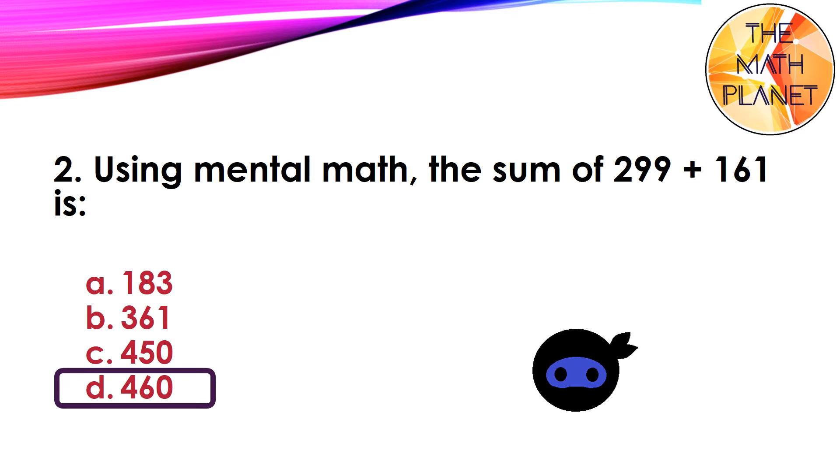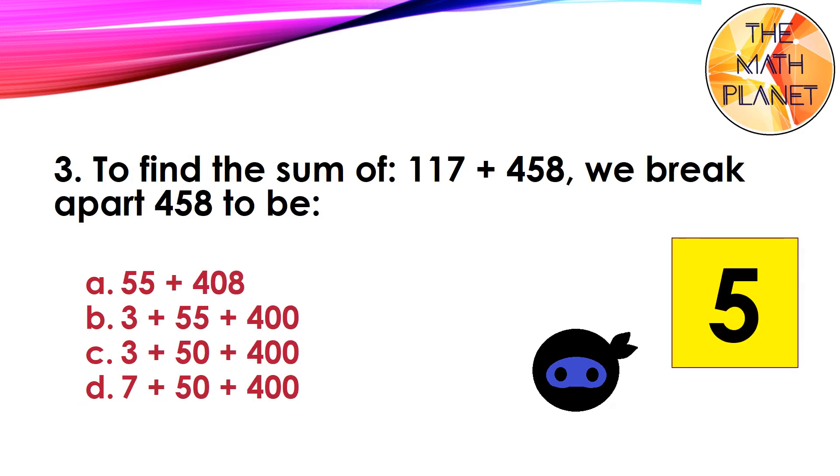Question 3. To find the sum of 117 plus 458, we break apart 458 to be: 55 plus 408, or 3 plus 55 plus 400, or 3 plus 50 plus 400, or 7 plus 50 plus 400.